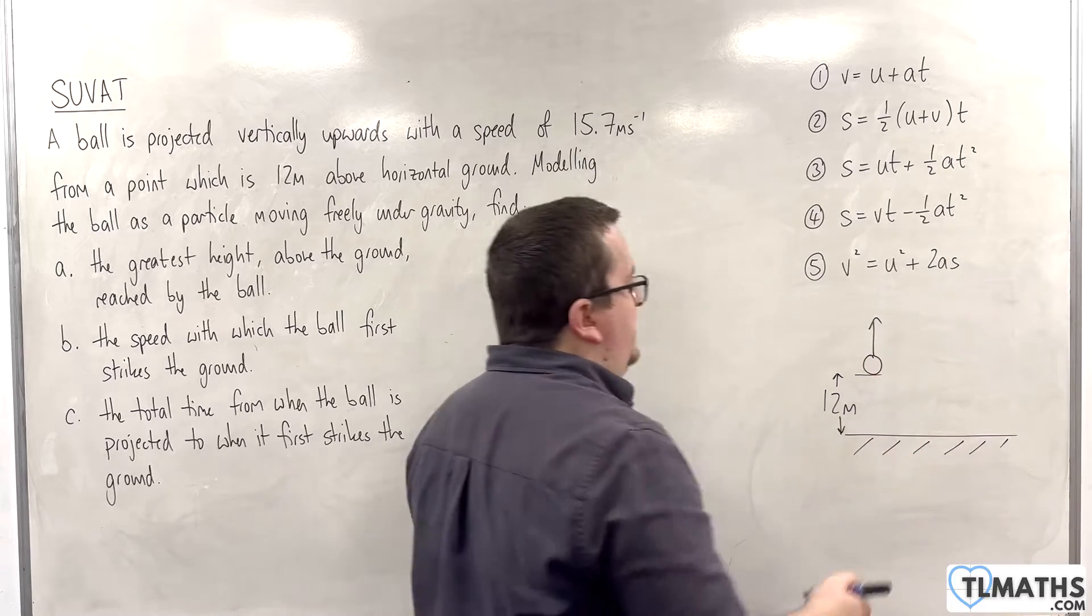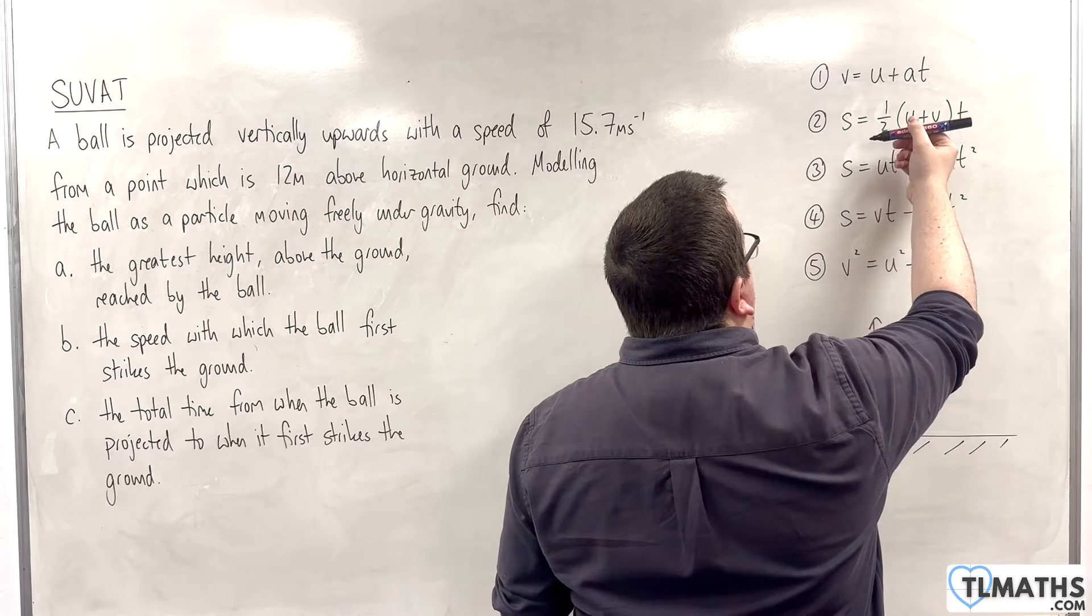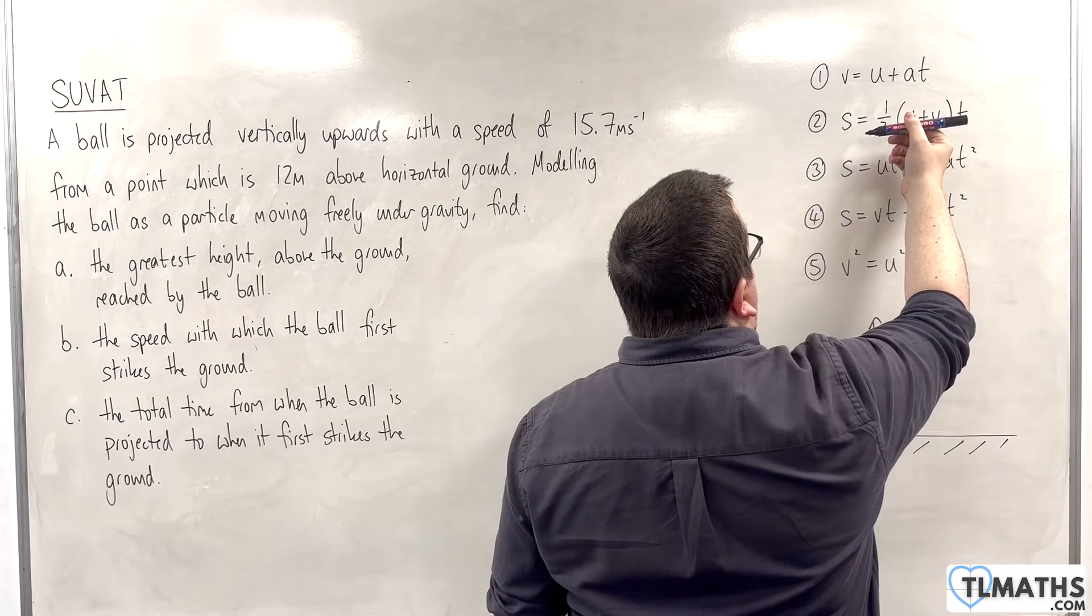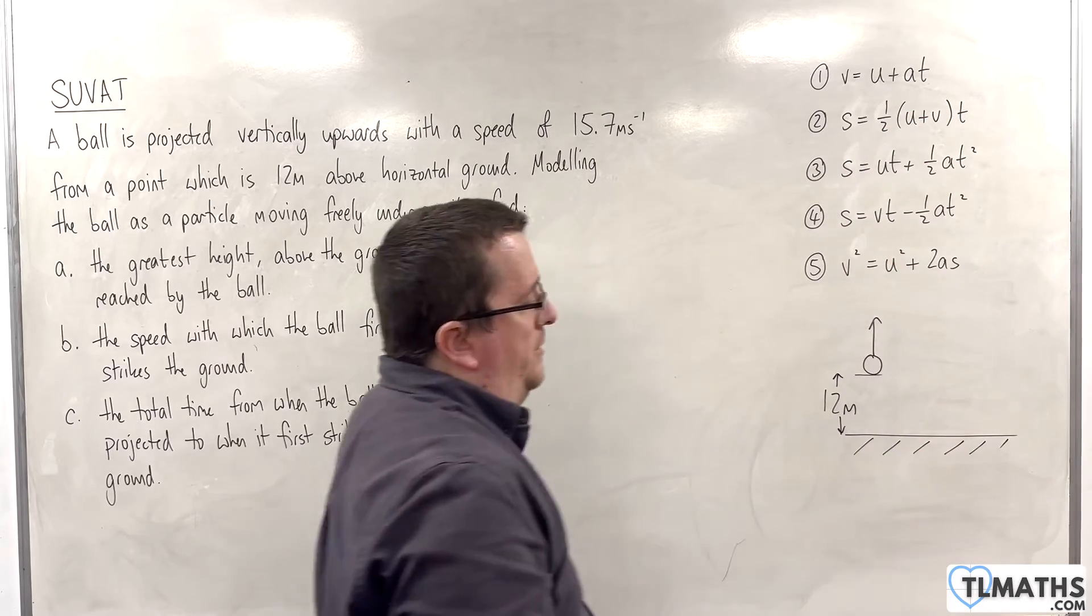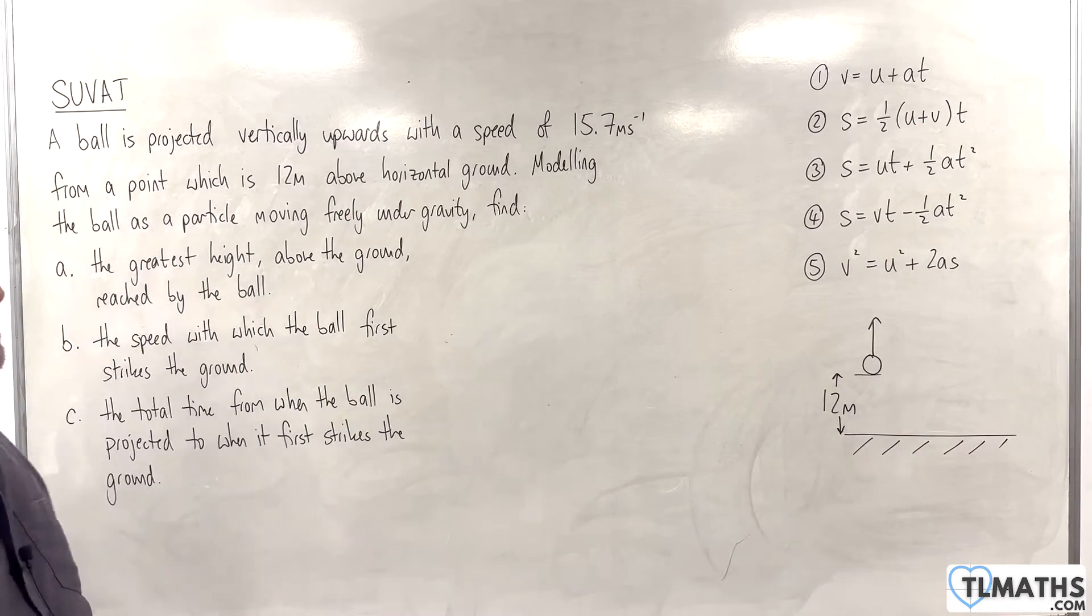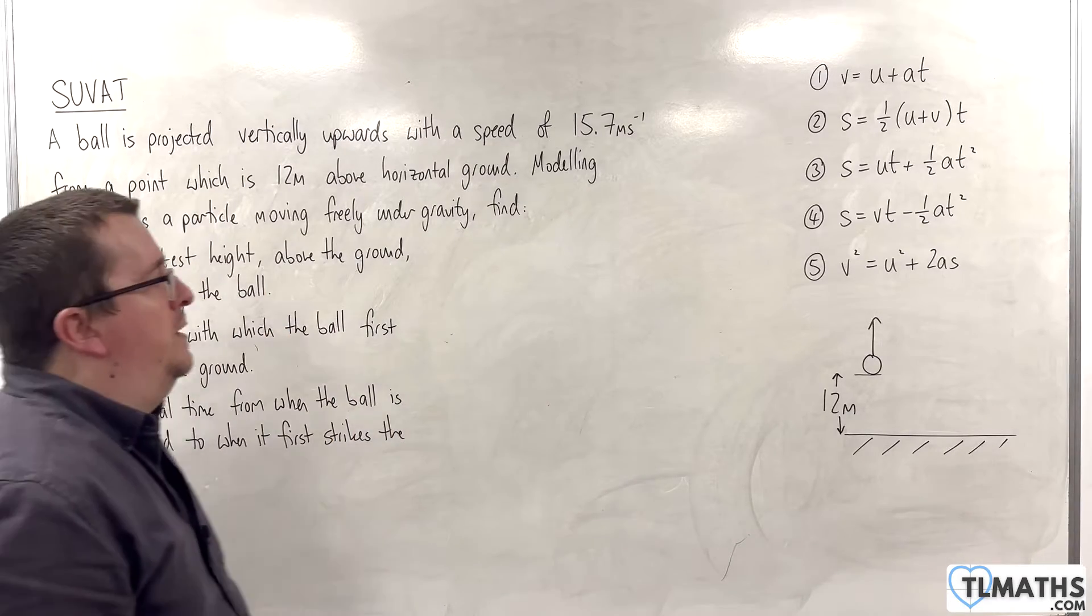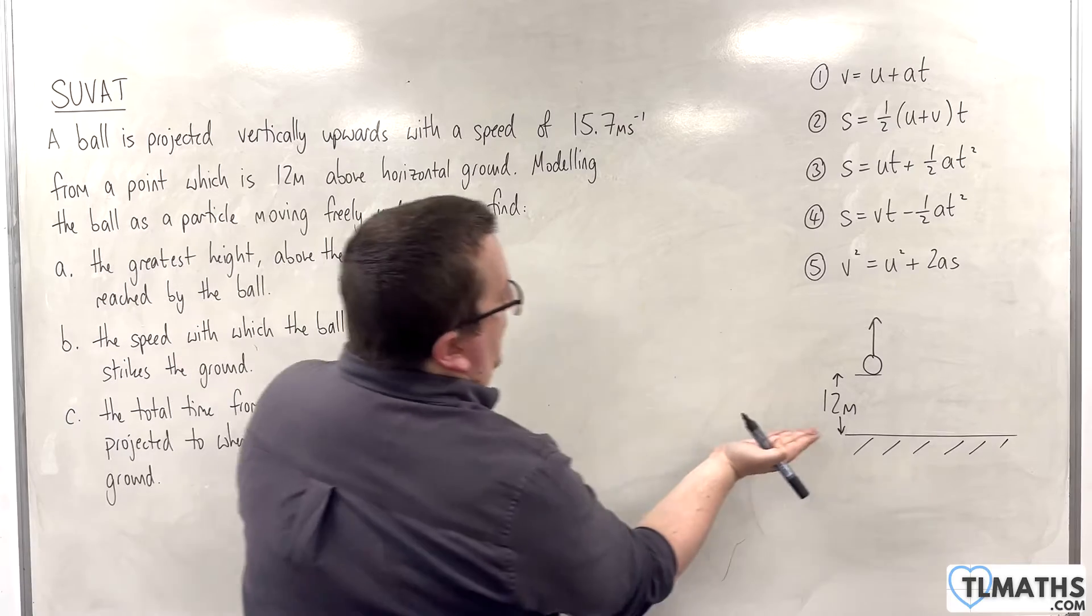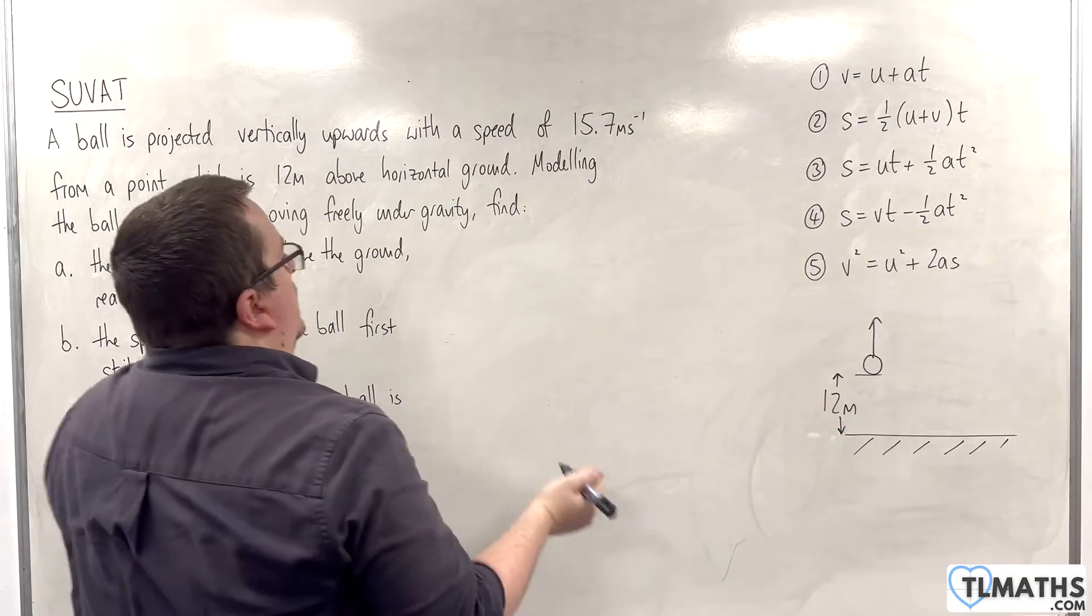It is projected vertically upwards from a height of 12 metres. It's thrown upwards and it's going to reach a maximum height when its velocity is zero. Then it's going to start falling back towards the ground, accelerating towards the ground. So, we want to find the greatest height above the ground reached by the ball, essentially from there up to that highest point.